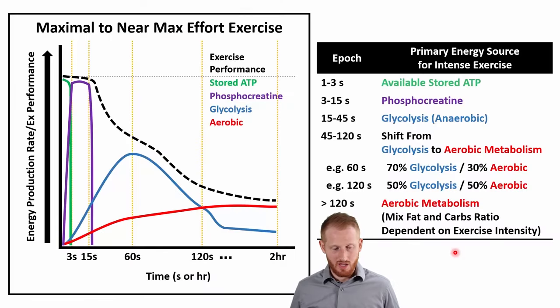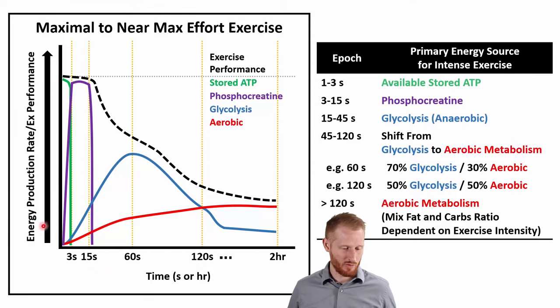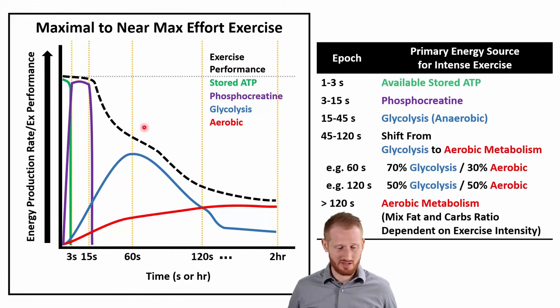In this video we're going to be talking about the various energy pathways and which one is the primary energy pathway based on the duration of exercise during intense exercise. Looking at this figure, we have time on the x-axis — not uniform, going from 3 seconds to 15 seconds to 60 seconds to 120 seconds to two hours. On the y-axis we have energy production rates. The dotted black line is the actual exercise performance level, and the various lines represent different sources of ATP production.